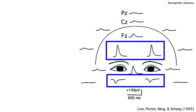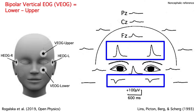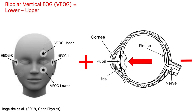Researchers often take advantage of this by computing a bipolar vertical EOG signal, which is lower minus upper. A negative minus a positive is a bigger negative, so the bipolar VEOG allows us to see the blink even better. The bipolar VEOG also lets us look at upward and downward eye movements.